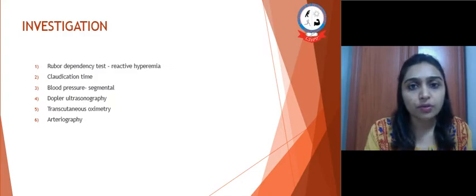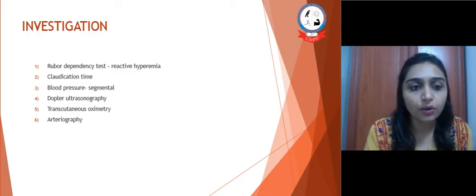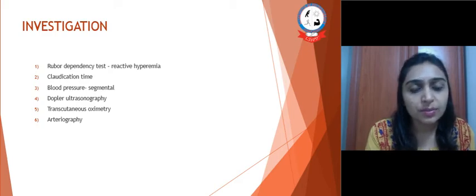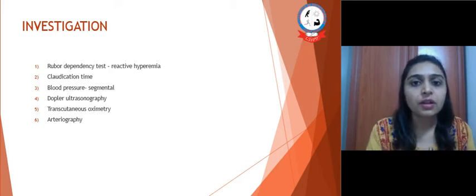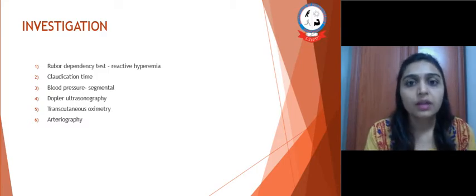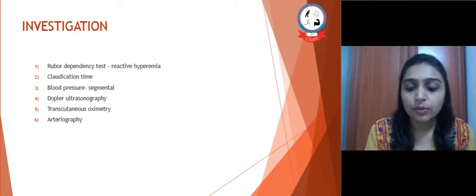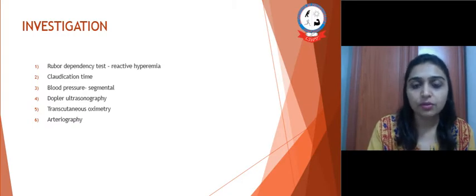Diagnosis and investigation of this condition can be done with a variety of tests. Clinically, a Buerger's dependency test can be performed. We can also find out the claudication time; segment blood pressure should be checked. Transcutaneous oximetry can give us the precise area of ischemia. Doppler ultrasonography can suggest the area of occlusion, and arteriography can give the most complete picture of the disease.